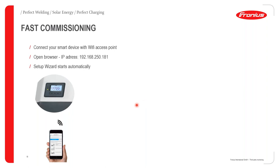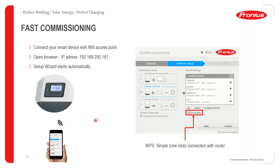Open your browser and type in the IP address 192.168.2.0.181. This automatically opens the setup wizard through which you can continue with your commissioning. There is also a WPS function — Wi-Fi Protected Setup — which allows you to connect to a router without typing any password, making the connection quite easy.